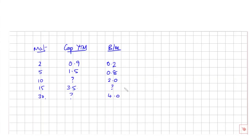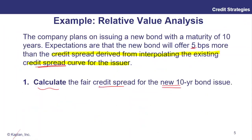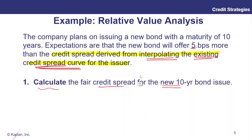I think most people, if they guessed what to do here even knowing how to interpolate, might guess the wrong thing. The reason is because we've been asked specifically to interpolate the existing credit spread curve for the issuer — not the corporate yield curve. We're not interpolating to get our answer directly. We might need to use interpolation, but to get our answer we're going to interpolate the credit spread curve.